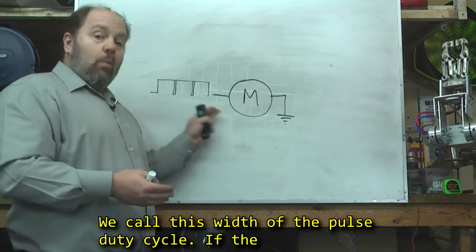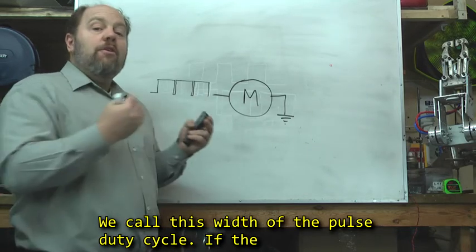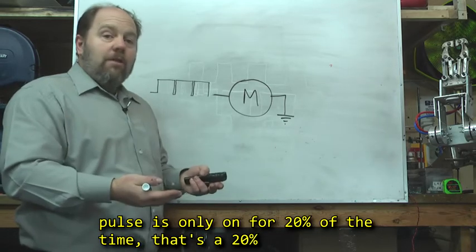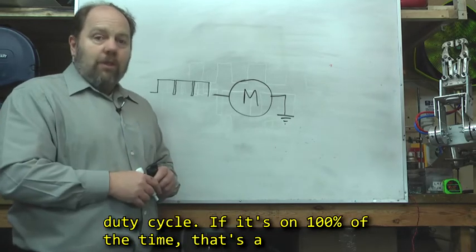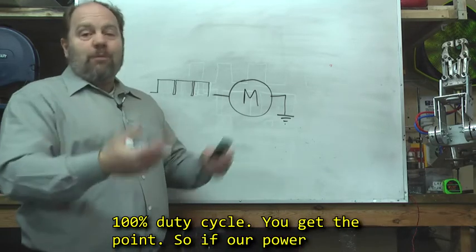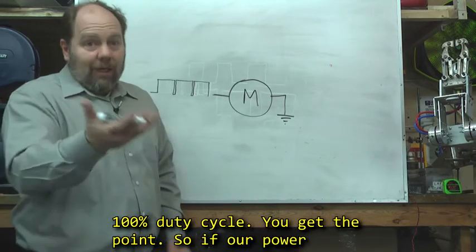We call this pulse width, or the width of the pulse, the duty cycle. If the pulse is only on for 20% of the time, that's a 20% duty cycle. You get the point.